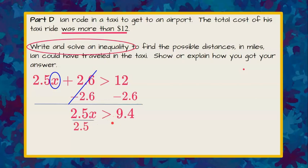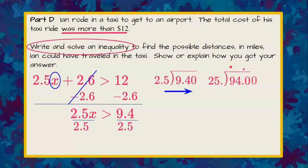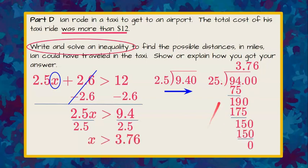Now we're going to divide each side by 2.5 and let's do our long division. 9.4 divided by 2.5—we need to move the decimal point one space to the right. So we're going to carry our decimal point up. 25 goes into 94 three times. 3 times 25 is 75. We subtract and we get 19. Bring down a zero. 25 goes into 190 seven times. 7 times 25 is 175. Subtract and we get 15. Bring down a zero. 25 goes into 150 six times. 6 times 25 is 150. So we know that he went more than 3.76 miles.